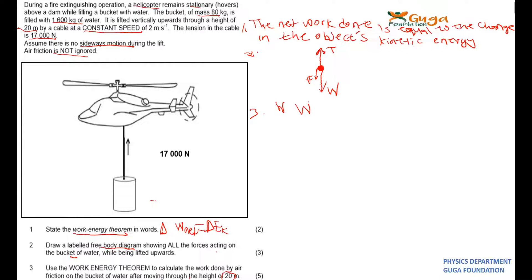Work net equals change in EK. So how many forces are acting? You will have the work done by tension, then you add the work done by the weight, then you add the work done by the friction. So we're told that it's at a constant speed.